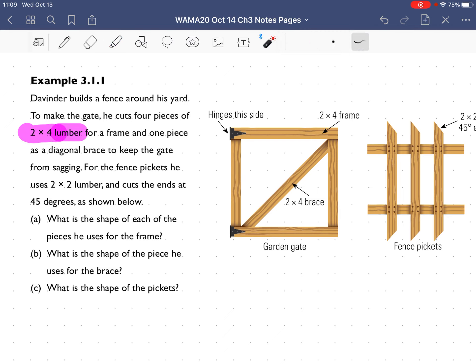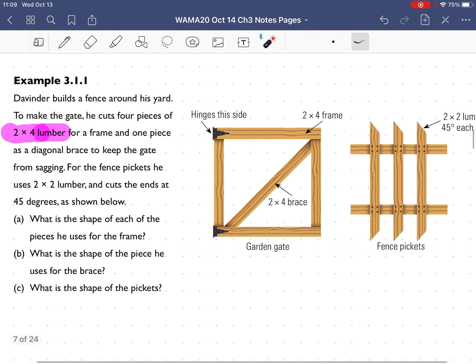from 2x4 lumber for the frame. So that's this one here, there's the gate, and one piece as a diagonal brace. Here's the diagonal brace.